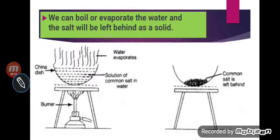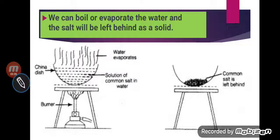So it is very clear: when a mixture contains more than two components, we can use more than two processes. In this mixture we have done three processes — first, magnetic separation; second, filtration; and third, evaporation. With the help of these processes, we can get every substance separately.